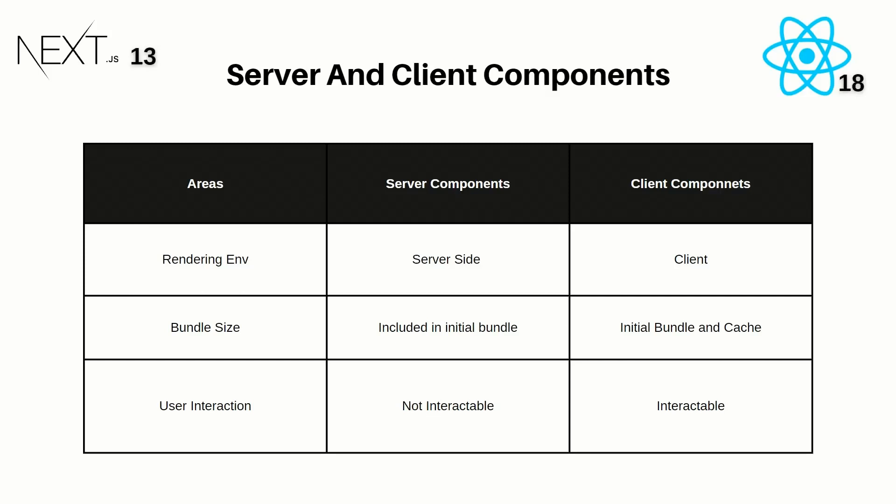The third area is user interaction. User interaction is not available inside server components because they are rendered as a static site — you cannot interact with anything. But inside client components, you have user interaction: forms, buttons, links, and more. Server components are like static pages such as blog pages where you can only view content. User interaction is available on the client because we have access to the DOM.